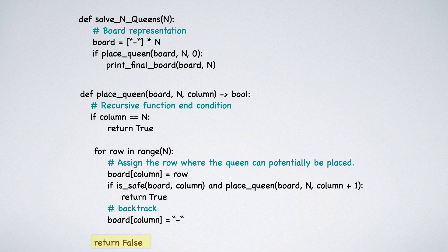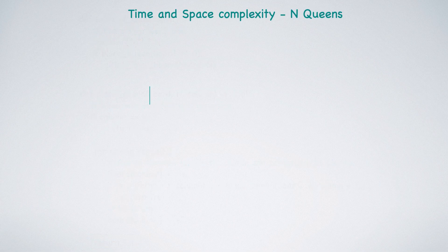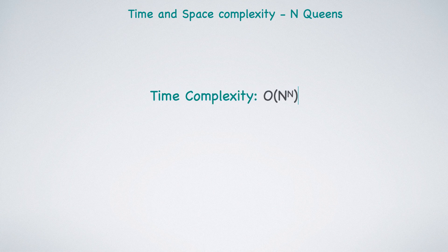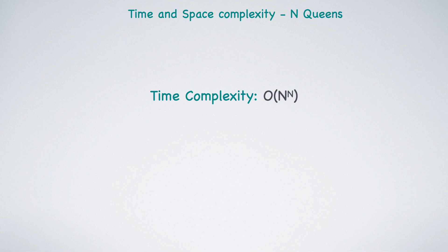The time complexity of this algorithm is O of N to the power of N. The place queen function tries to place a queen in each of the N rows for every column, leading to N recursive calls per column. If a placement fails, the algorithm backtracks and tries the next possible placement, potentially exploring all N to the power of N configurations in the worst case. The space complexity is O of N due to board storage and recursion stack.